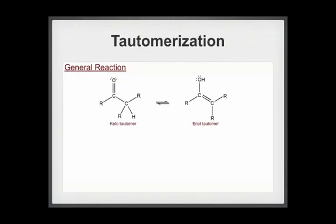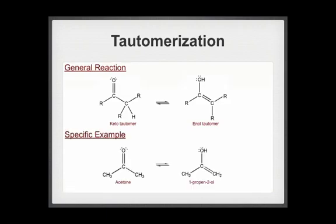In this general reaction, the keto tautomer is converted to the enol tautomer. In this more specific example, acetone, a keto tautomer, is converted to 1-propene-2-ol, an enol tautomer.